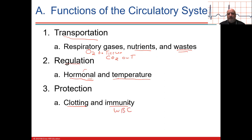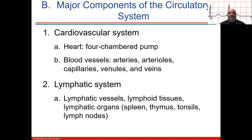We're going to talk about the constituents of blood. Blood is basically formed elements, which are the cells, and the plasma, which is mostly water. This is the pump — the heart — where everything is pumped out, and all your cardiac output goes through it.